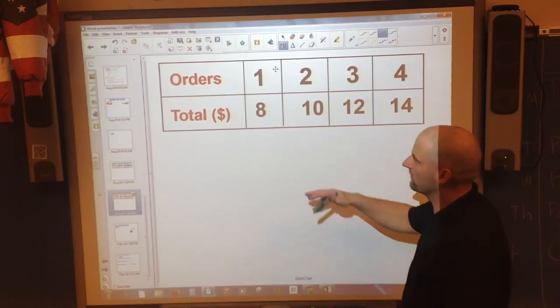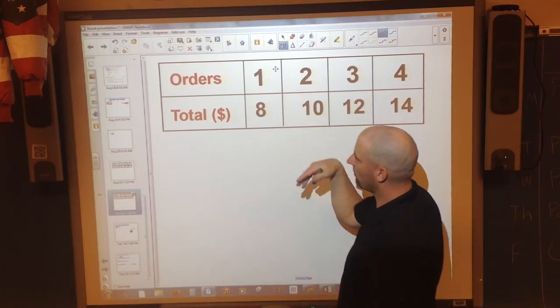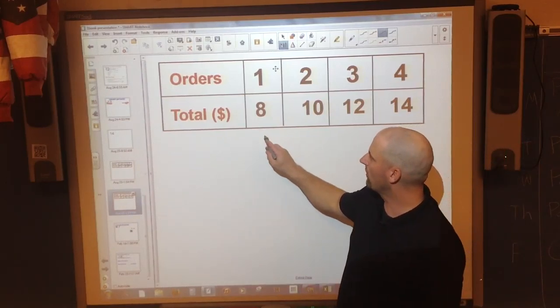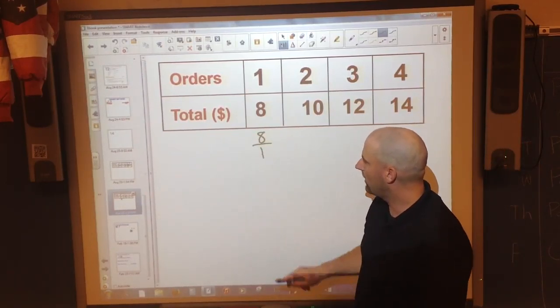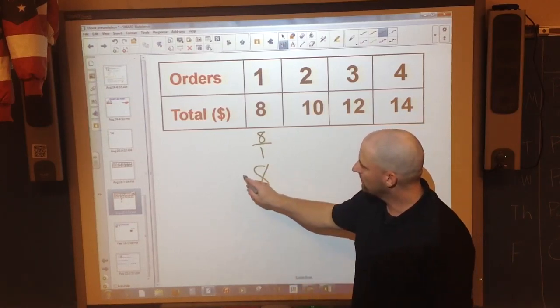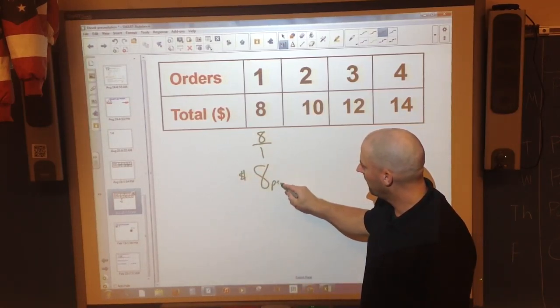So first of all, which one makes more sense? Orders per dollar or dollars per order? You've heard me say that dollars generally is on top, so let's go ahead and do it in that order. Dollars per order. So if I divide 8 by 1, I get 8. That is $8 per order.